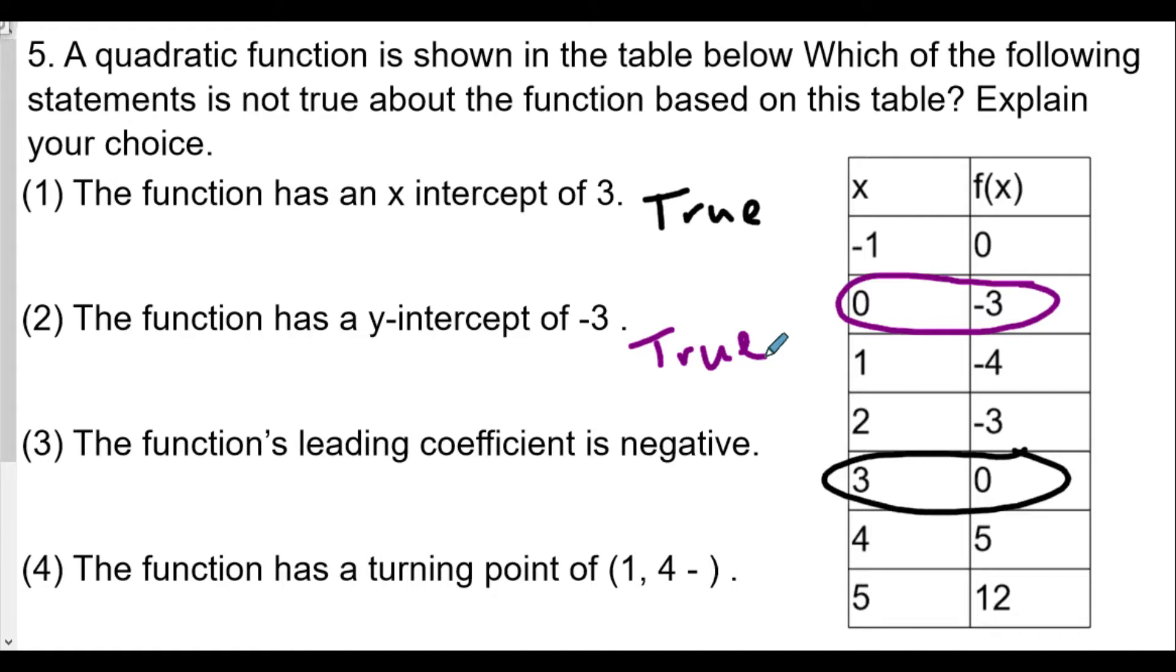I want to take a look at choice four. The function has a turning point of (1, -4). So sorry about this flub here, (1, -4).